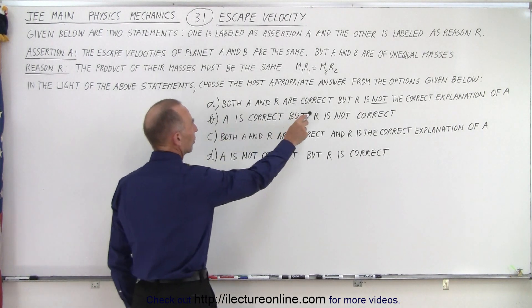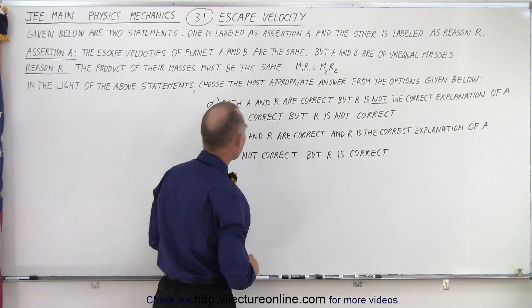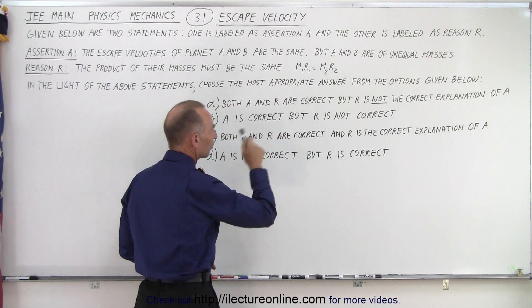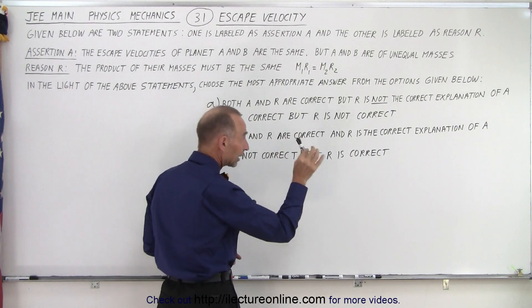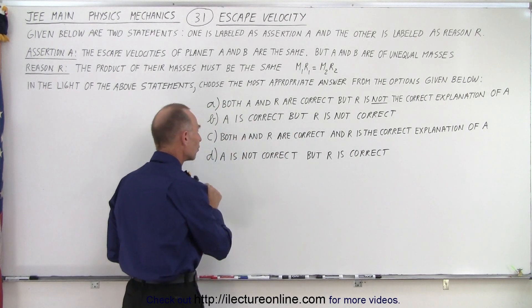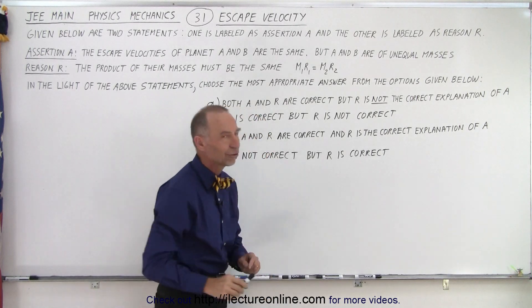Both A and R are correct, but R is not the correct explanation of A. A is correct, but R is not correct. Both A and R are correct, and R is the correct explanation of A. And A is not correct, but R is correct.